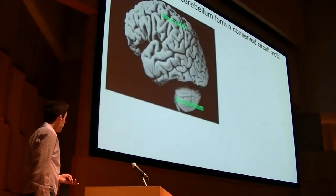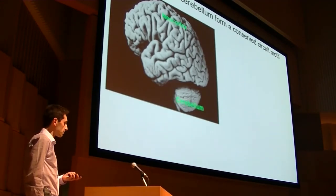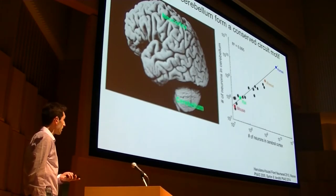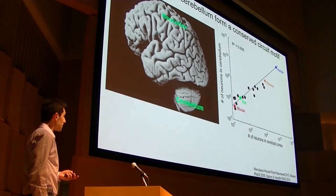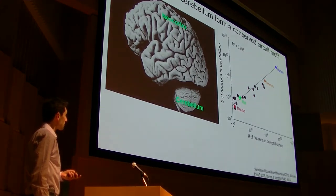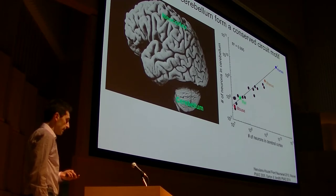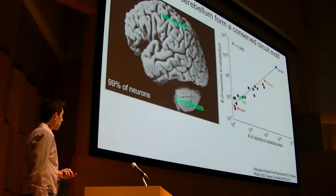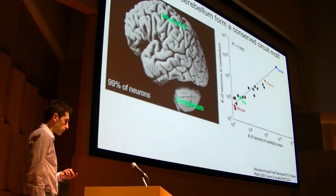So the cerebellum, of course, long evolutionarily predates the neocortex, but from the time that mammals have come on the scene, the two structures have expanded basically in tandem with a pretty conserved ratio of about four times as many neurons in the cerebellum as in the cerebral cortex. And because the rest of the brain has not really kept pace with that expansion, what you find is that 99% of all neurons in the human brain are contained in these two structures.